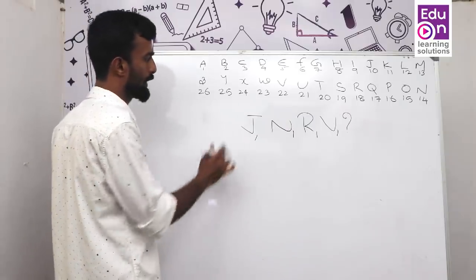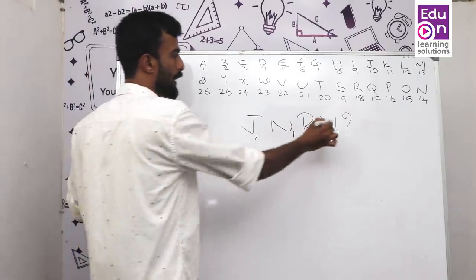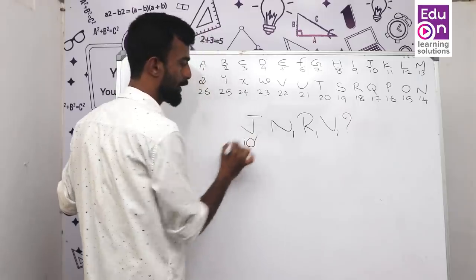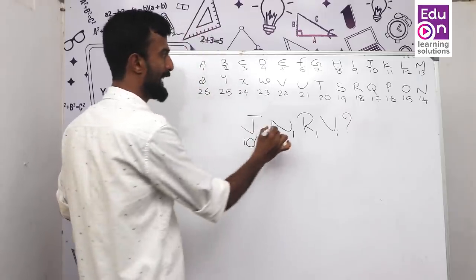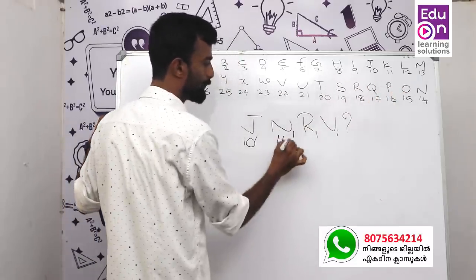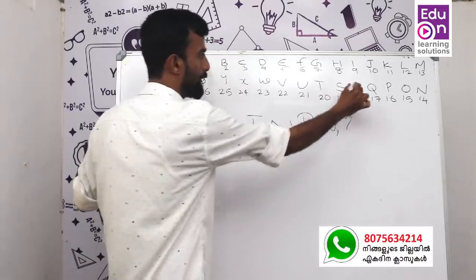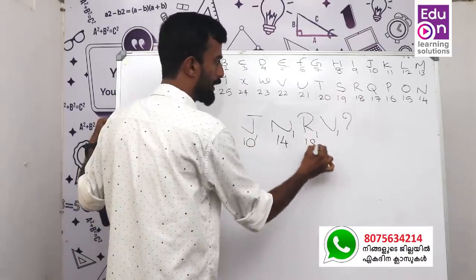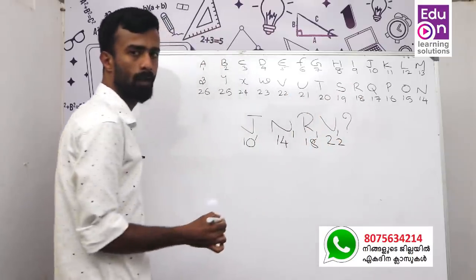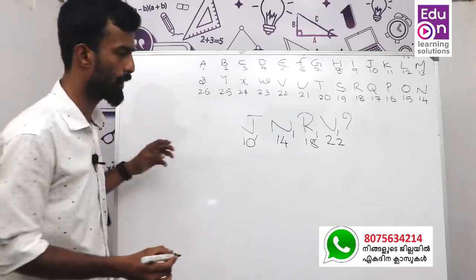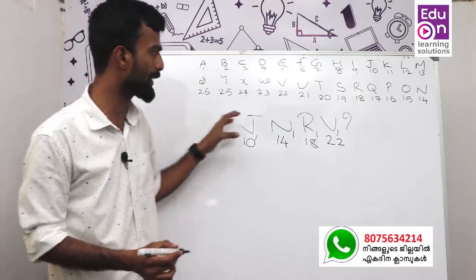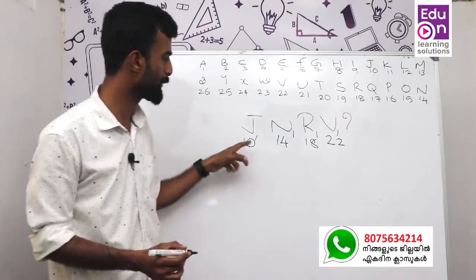First question: J, N, R, V. N is 14. The positions are: J=10, N=14, R=18, V=22 — the difference is 4 each time.